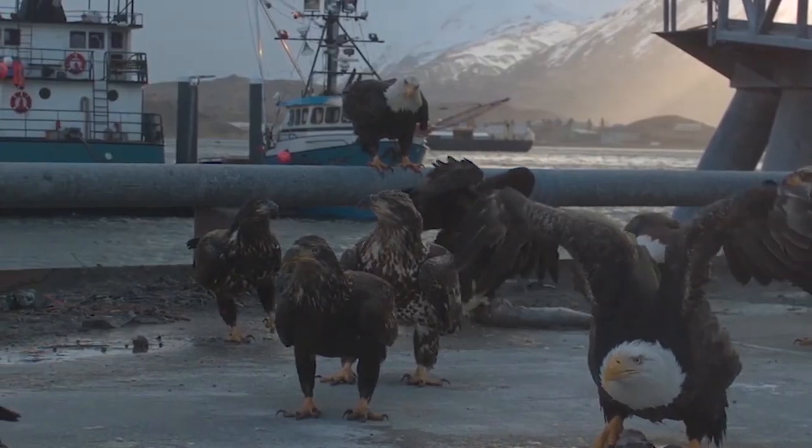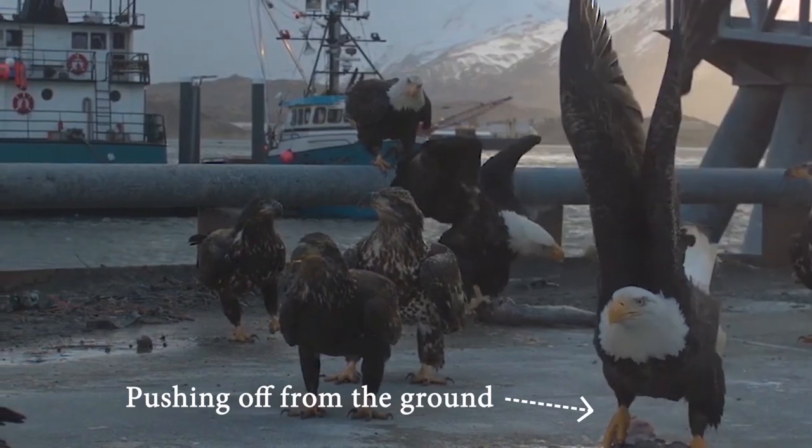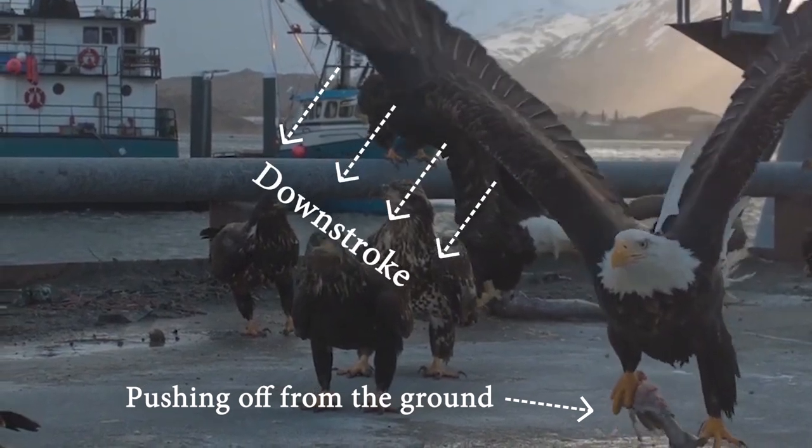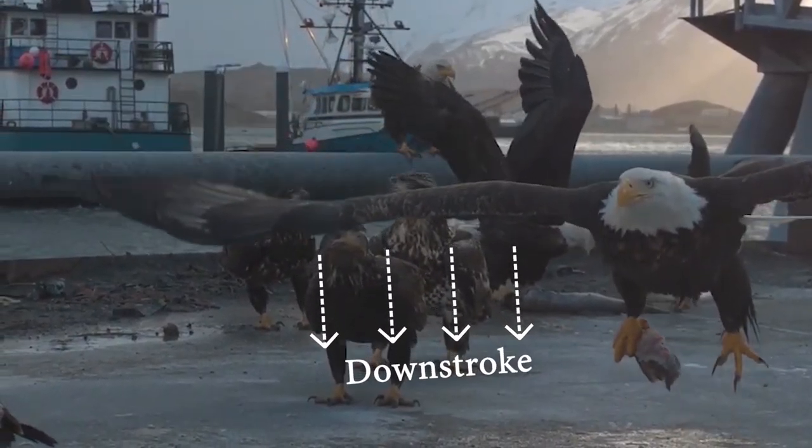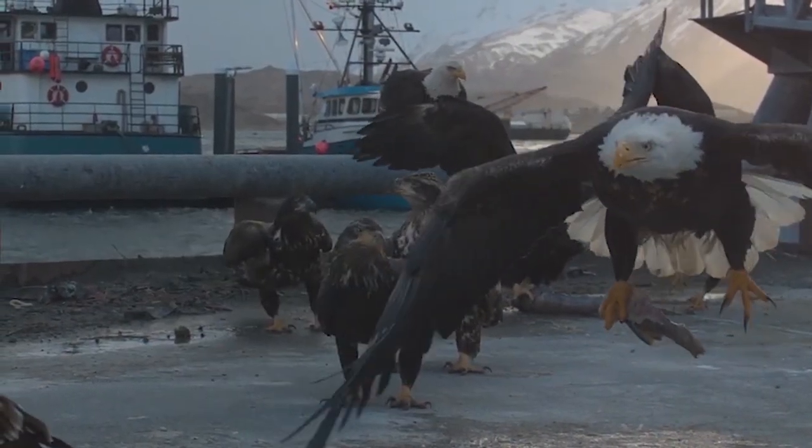To lift off from the ground, different birds use different mechanisms. Two common ones though are the bird pushing off with their legs and also flapping their wings. Now, when a bird flaps its wings, there are two main strokes. You have the downstroke and the upstroke.